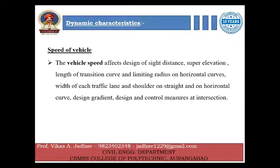Another dynamic characteristic is the speed of the vehicle. Vehicle speed affects the design of sight distance, super elevation, length of transition curve and limiting radius on horizontal curve, width of each traffic lane and shoulder on straight and on horizontal curve, design gradient, and design and control measures at intersections. Depending upon the speed, we can provide the following design elements.